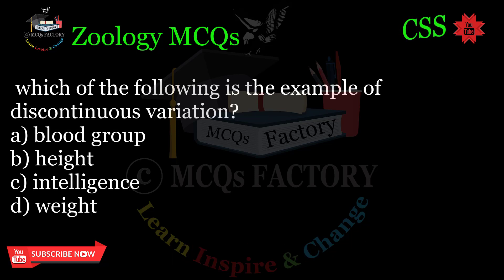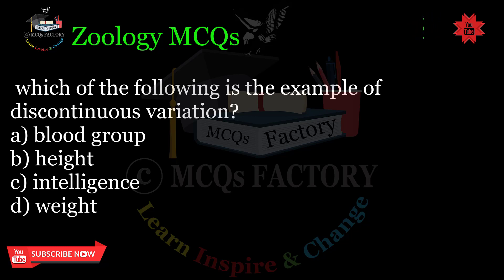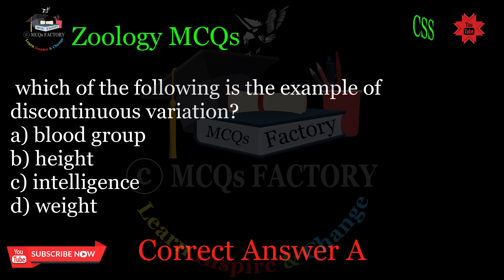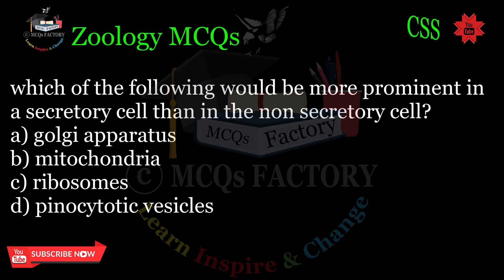Which of the following is an example of discontinuous variation? A. Blood group. B. Height. C. Intelligence. D. Weight. Correct answer: A.